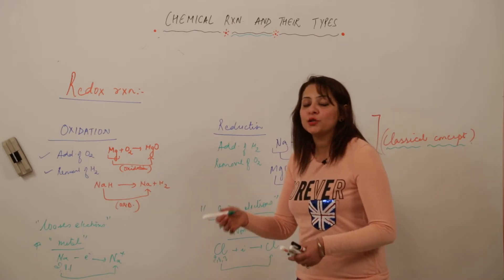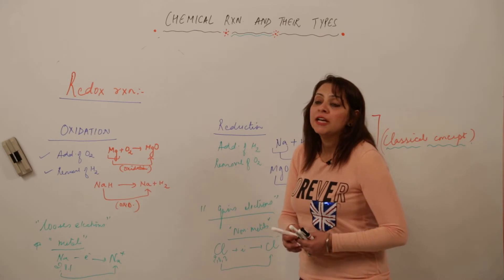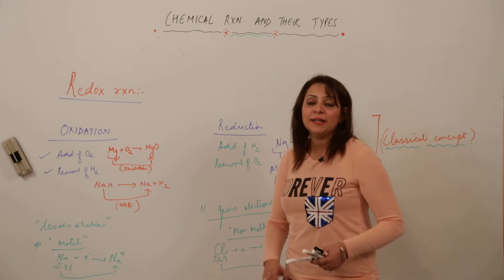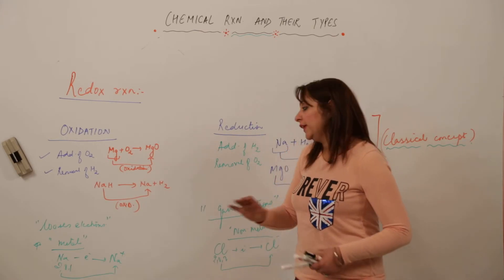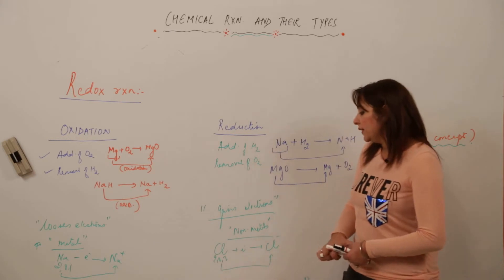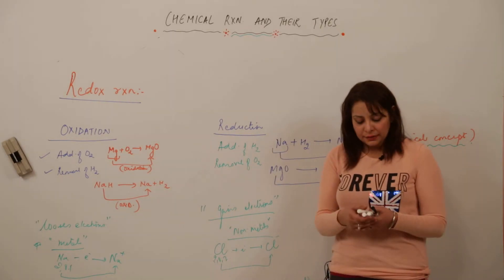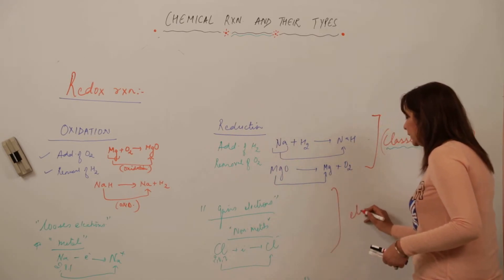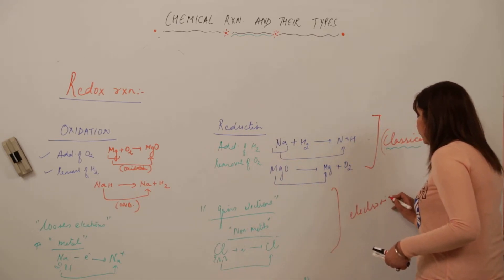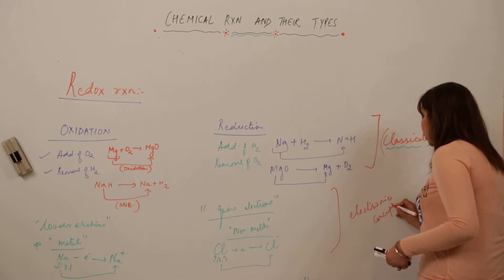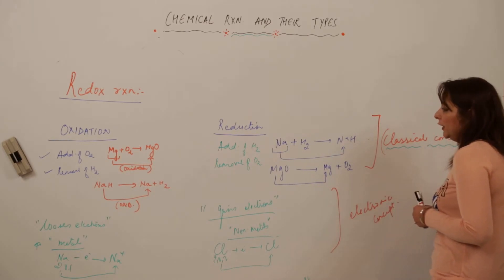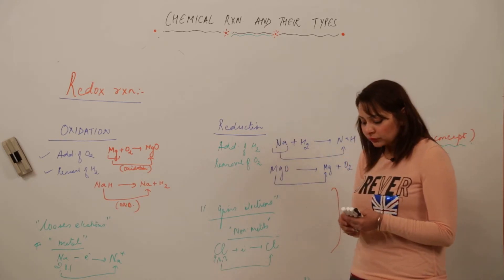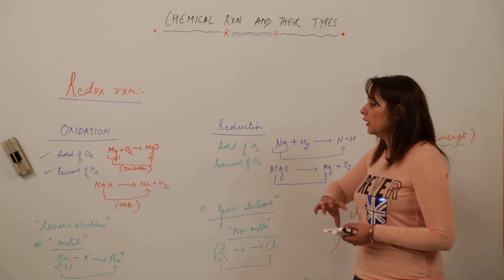When an element is losing electrons it is oxidation, and when it is gaining electrons it is reduction. This is the electronic concept, and the previous definitions formed the classical concept, which clearly explains oxidation and reduction.